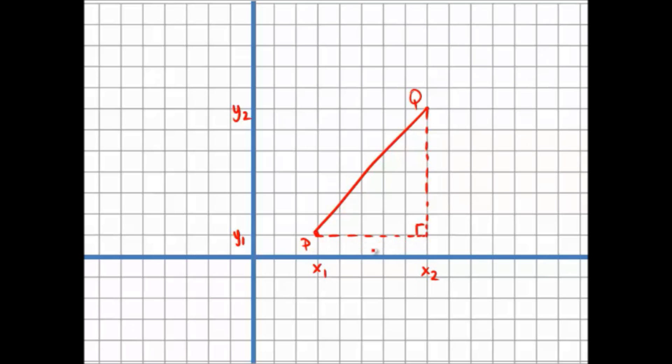So, in general, if you take the x values and subtract them, you're going to get the horizontal component. Similarly, if you take the y values and subtract them, you'll get the length of the vertical component.